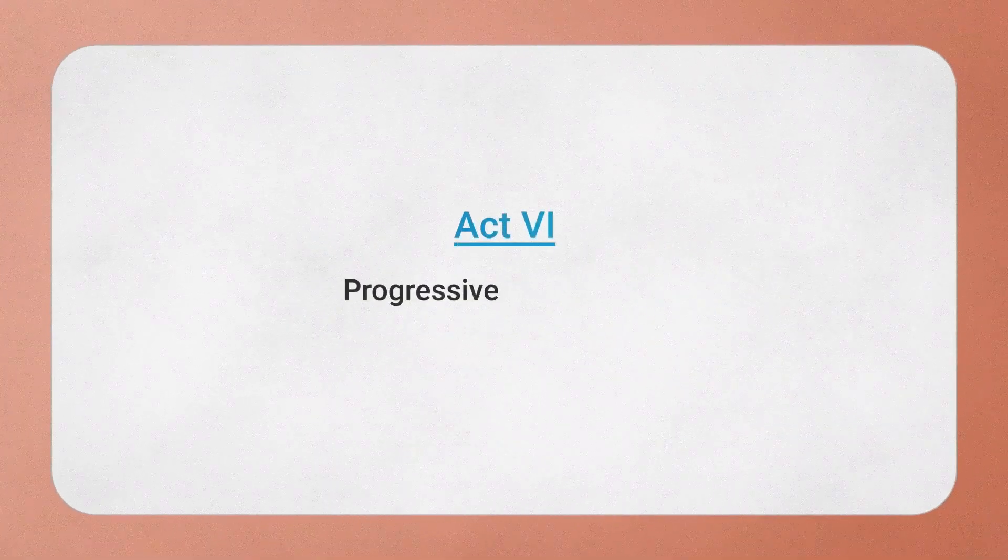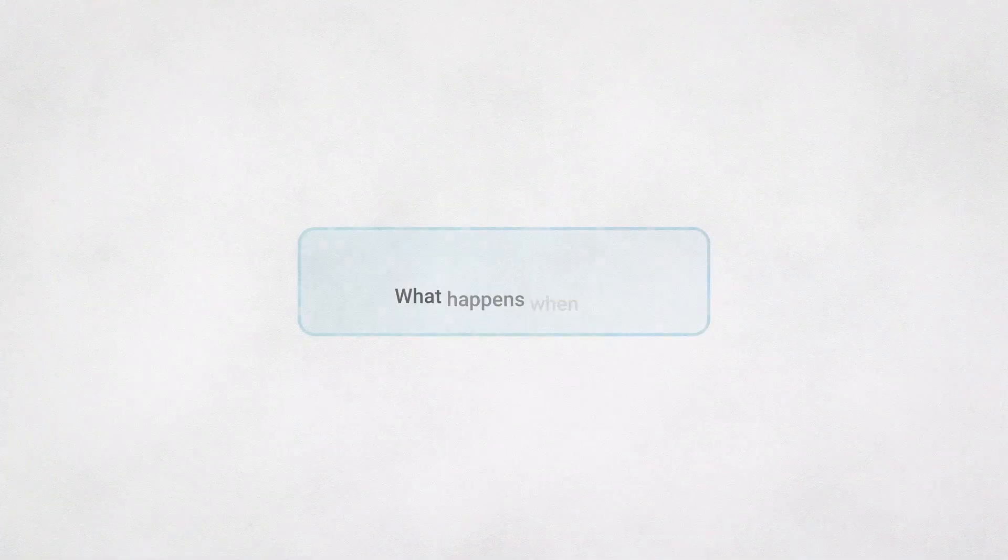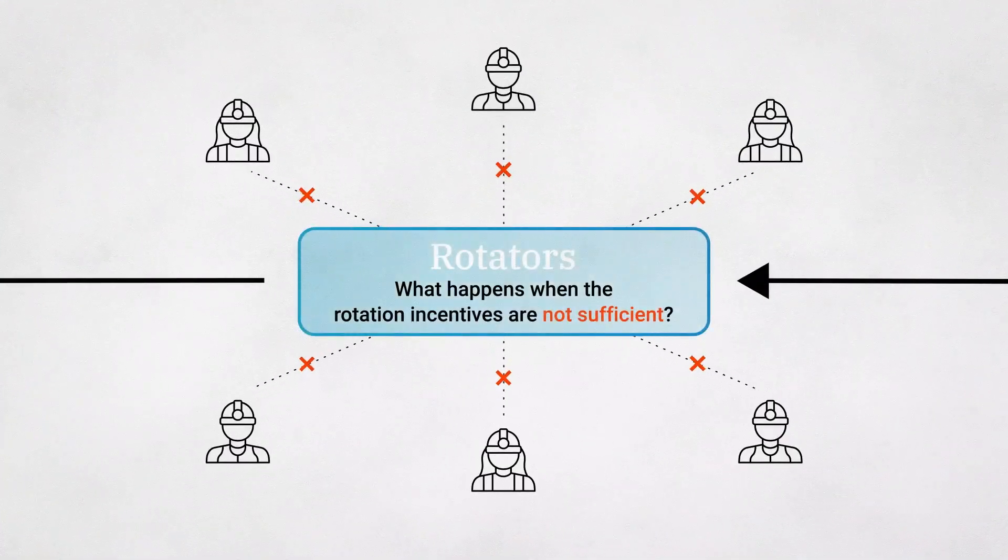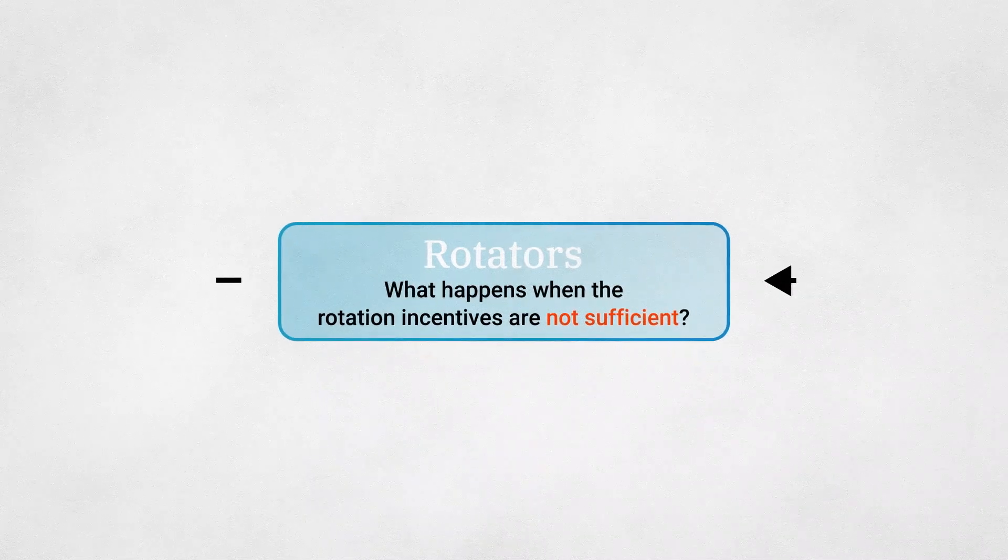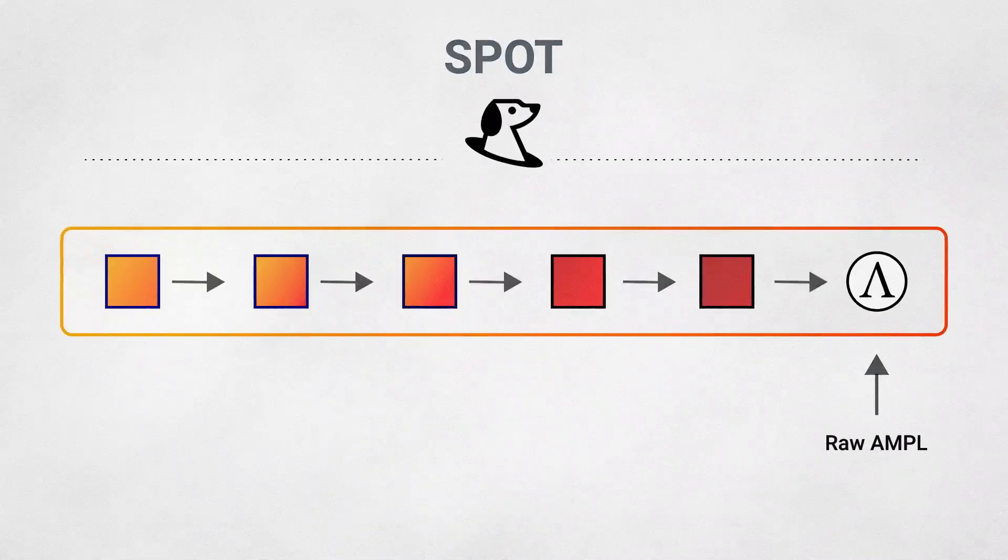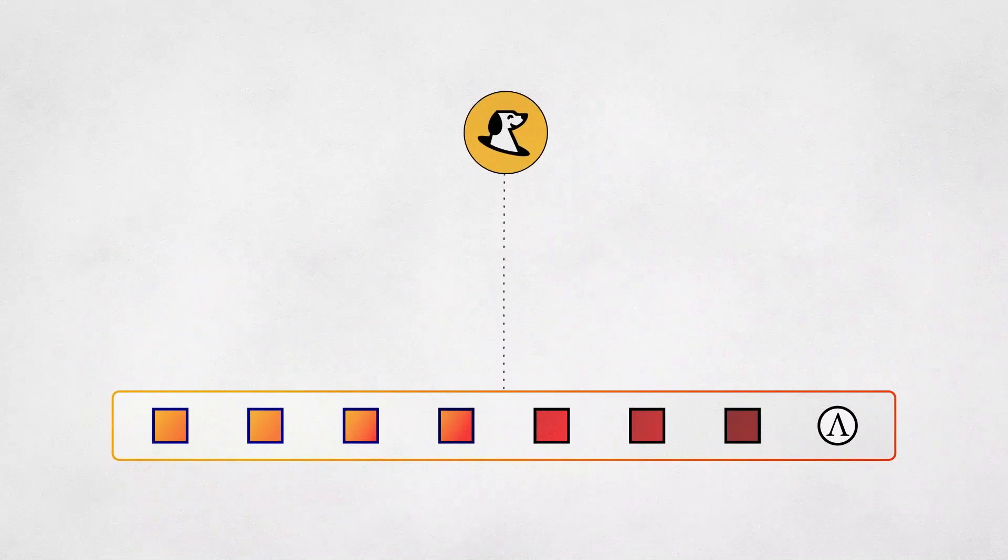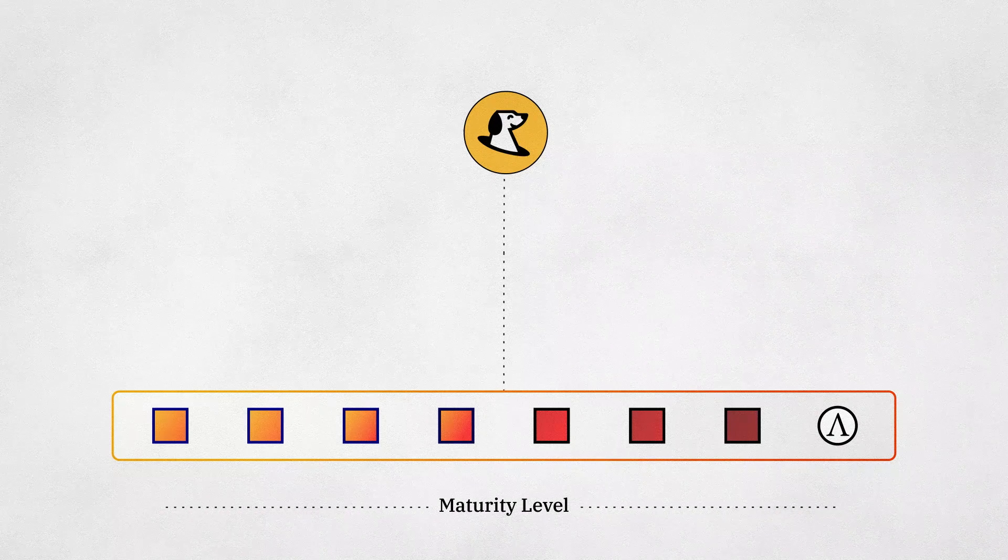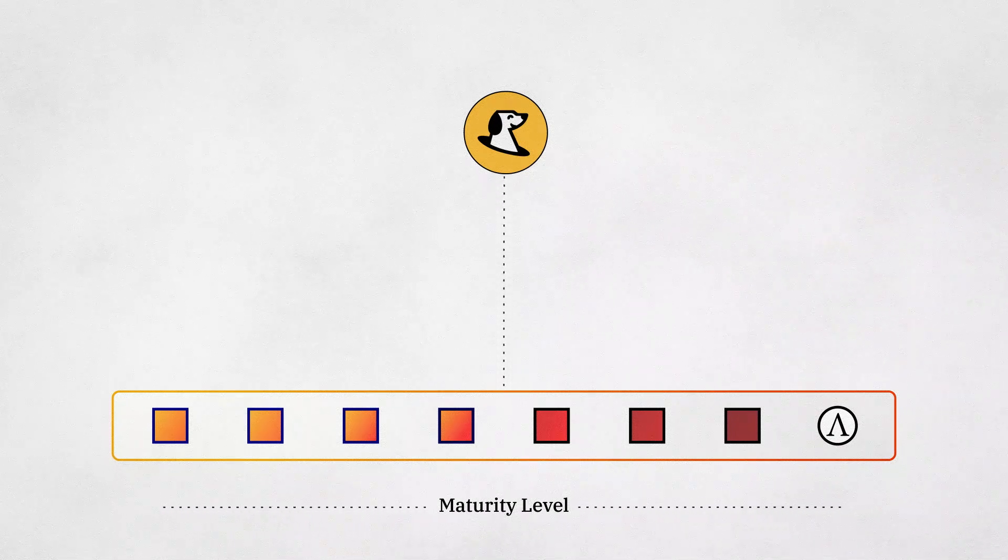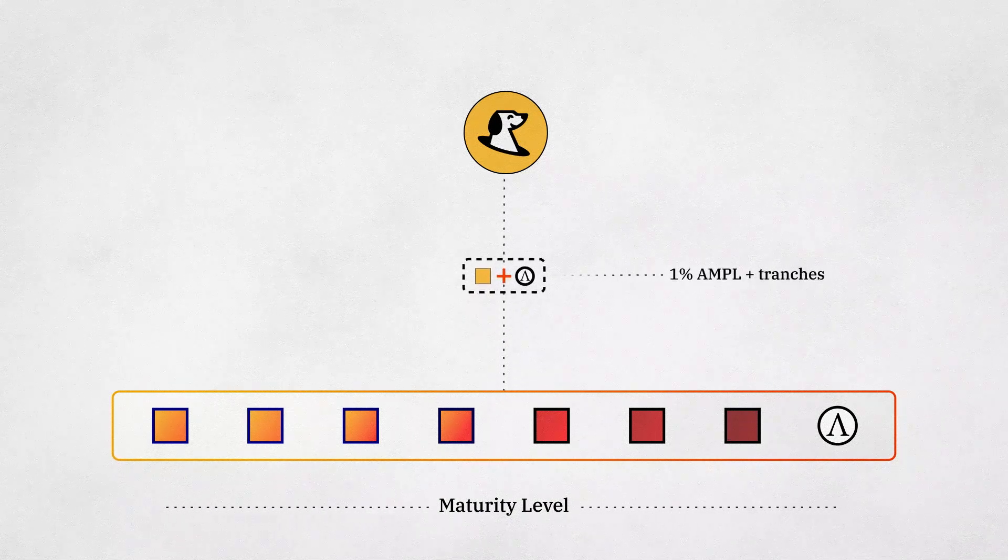Act 6. Progressive Degradation. What happens when the rotation incentives are not sufficient? In this case, the senior Ample tranche tokens progressively mature into raw Ample. Since SPOT is just a proportionally redeemable claim on a collateral set, as vintages of senior tranches in the collateral set mature, the token becomes redeemable for a combination of senior tranches and raw Ample.